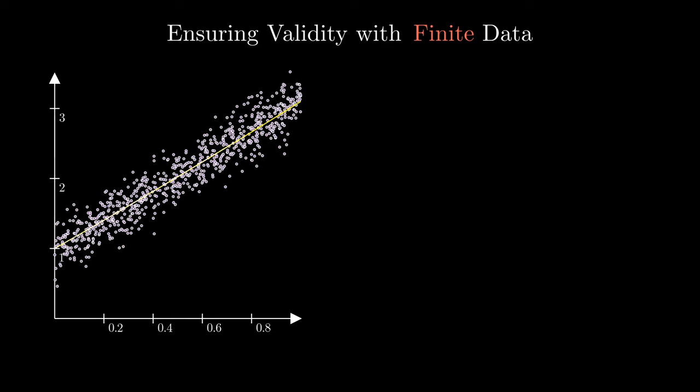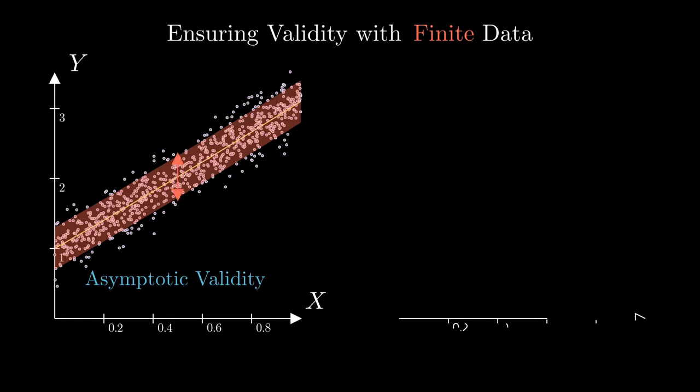While validity is a crucial property of predicted intervals, there is another aspect that we need to consider: the robustness of the validity when constructed using a finite dataset. Some methods may claim validity in an asymptotic sense, where it holds true when constructed with an effectively infinite number of data points.